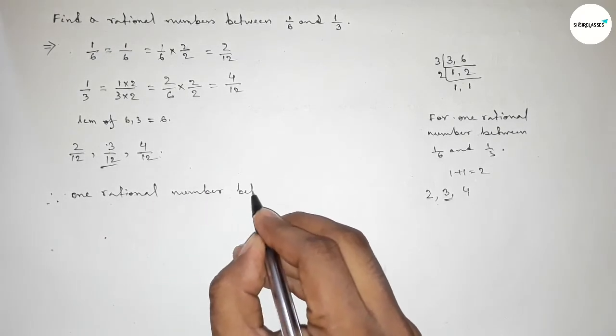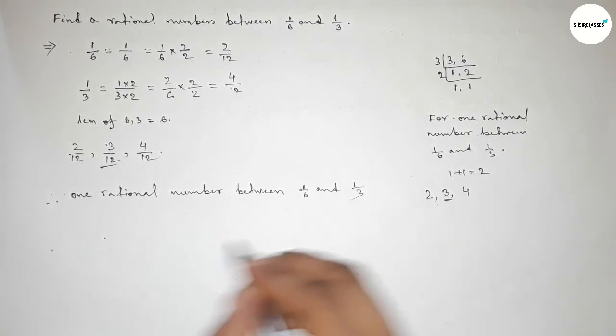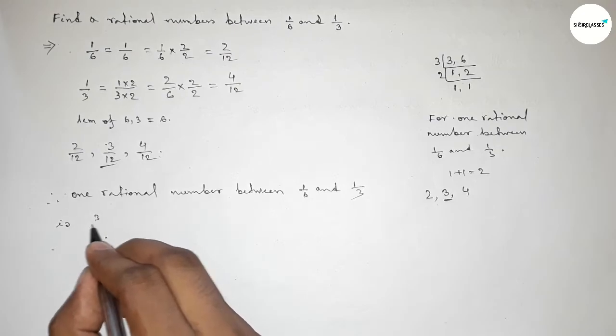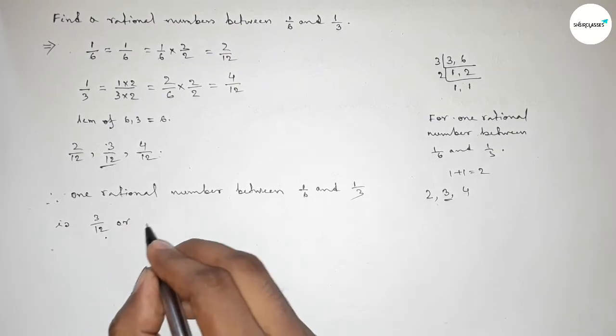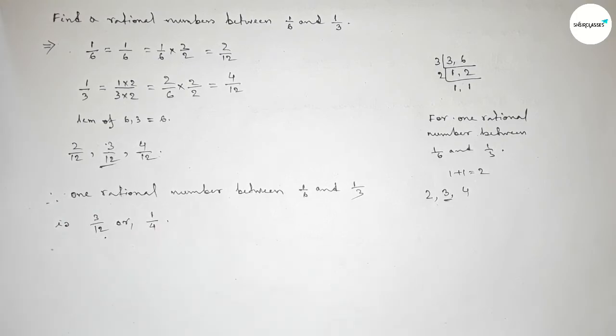So therefore, one rational number between 1 over 6 and 1 over 3 is 3 over 12, or we can write 1 over 4.